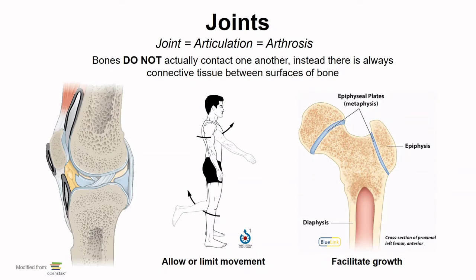Joints are the coming together of two bones, but in normal states these bones do not touch. One type of tissue found covering the ends of those bones is hyaline cartilage — that's the articular cartilage found on the articular surfaces of bones. We also see other structures between the two bones which support the joint, and we'll talk about each of those throughout this set of videos.